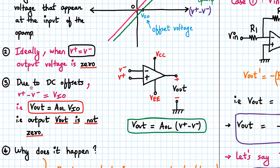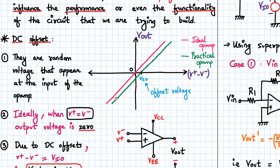This proves the point that output voltage is not zero. Now let us see that graphically. For an ideal op-amp, V+ minus V- is zero, so this curve will pass through the origin.